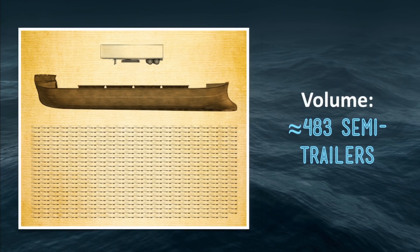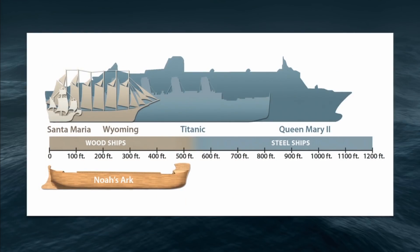Its volume is equivalent to about 483 semi-trailers, so you can put a lot of stuff in that Ark. Another way to get a sense of its size is to compare it to boats built in more modern times, like the Wyoming — a wooden ship about 450 feet long, pretty close to the Ark's length. It's not as big as the Titanic or the Queen Mary 2, which are steel ships. But the Ark wasn't a leisure ship — no one needed golf courses or shuffleboard. It was a survival cruise, a cargo ship that had to carry animals, provisions, water, and all those things. It had a very different purpose than the Titanic or the Queen Mary 2.